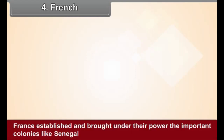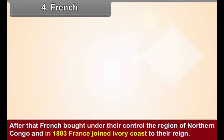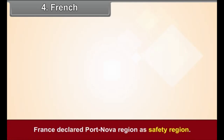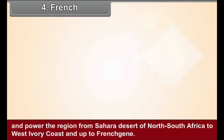Fourth, French: France established and brought under their power important colonies like Senegal and Gabon at the western border of Africa. After that, France brought the region of Northern Congo under their control. In 1883, France joined the Ivory Coast to their reign and declared the Port Nova region as a safety region. France also challenged Portugal and brought under control the Dahomey region on the western side of Nigeria. By 1914, France had brought under its power the region from the Sahara Desert in North Africa to West Ivory Coast and up to French Guinea.